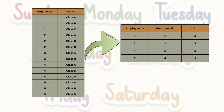We have a table called employees with two columns: employee ID and license. There are five employees, and each employee has some licenses. The question is to derive an output with three columns — employee one, employee two, and the count. For each employee, you have some type of license: class A, class B, and class C.